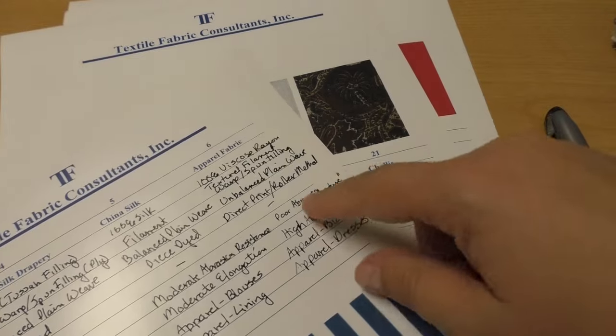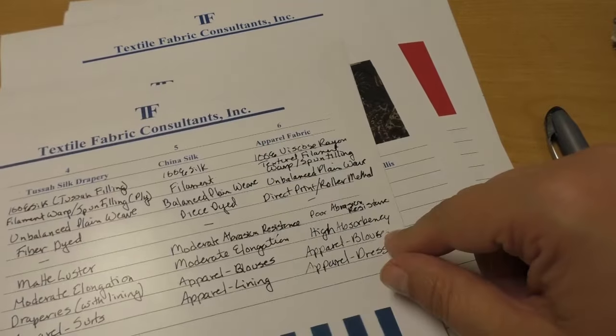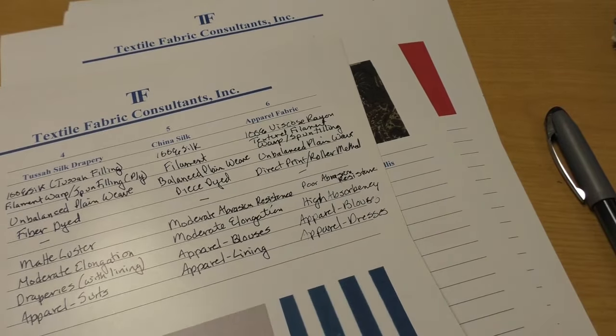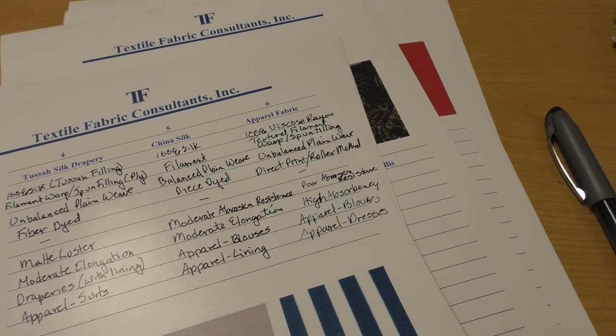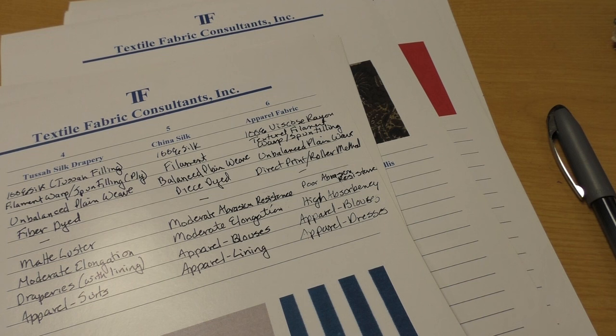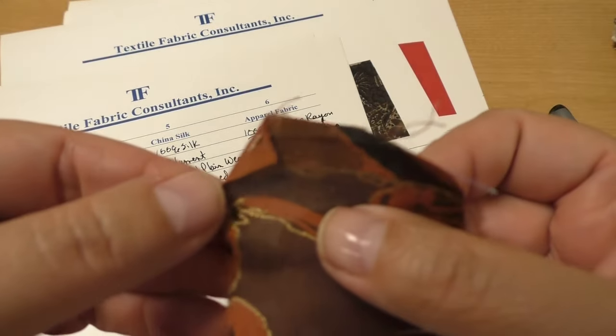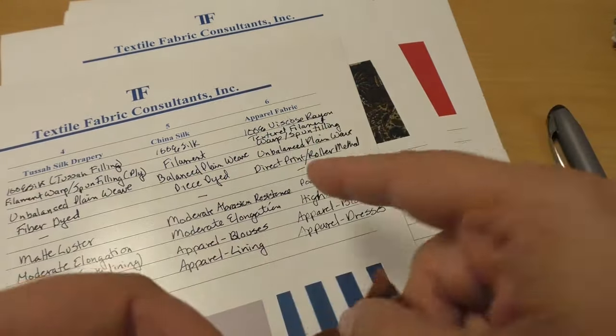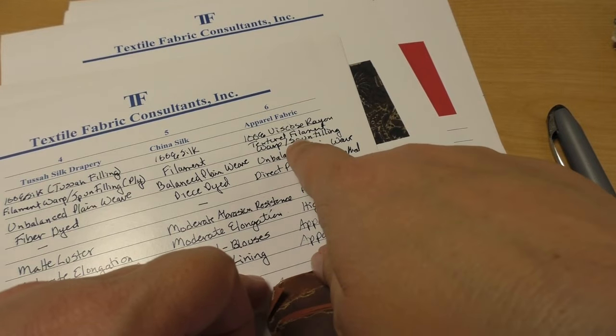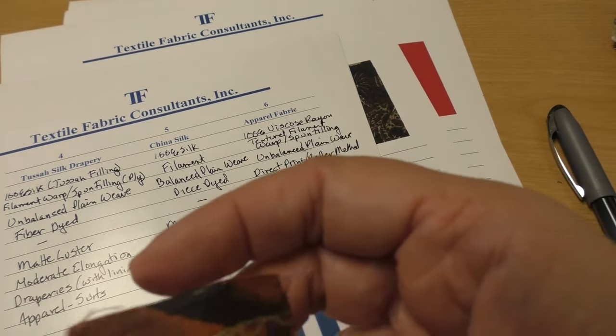Now this third swatch, swatch number six, it is a rayon swatch. I have one that is a slightly different color than yours, but I will still be able to use it to show you some of the difference between the yarns. So here's the swatch that I have. You'll notice that it says here it has a textured filament warp and a spun filling.